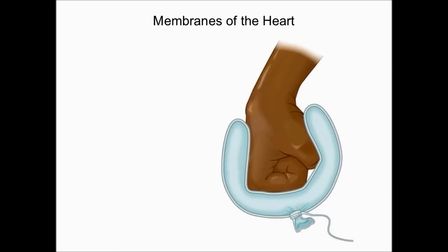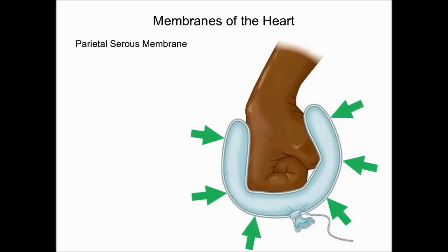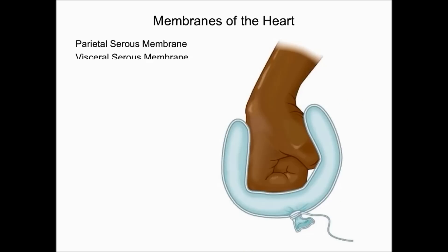Next, we'll discuss the membranes of the heart. The membrane that surrounds the heart is the serous membrane. The first part of the serous membrane is called the parietal serous membrane, which is the outermost membrane surrounding the organ. The second part is the visceral serous membrane, which is the innermost membrane — the part that actually touches the organ itself.